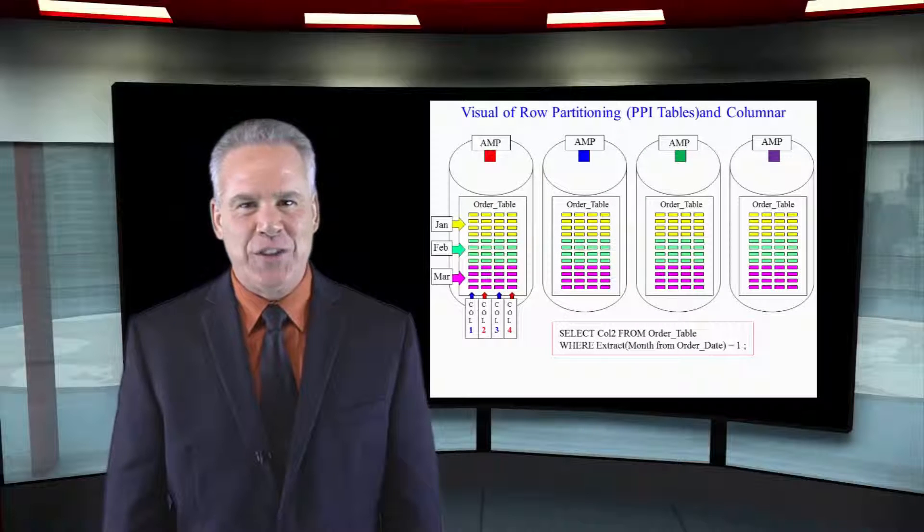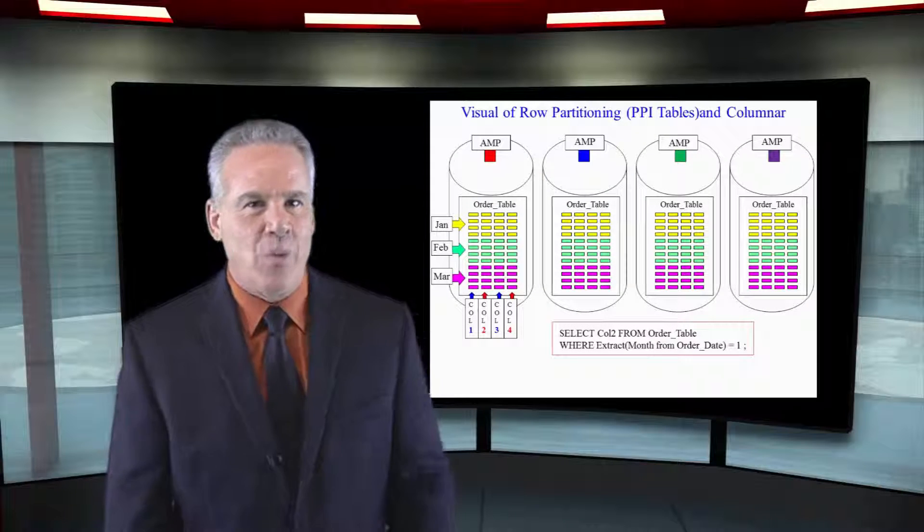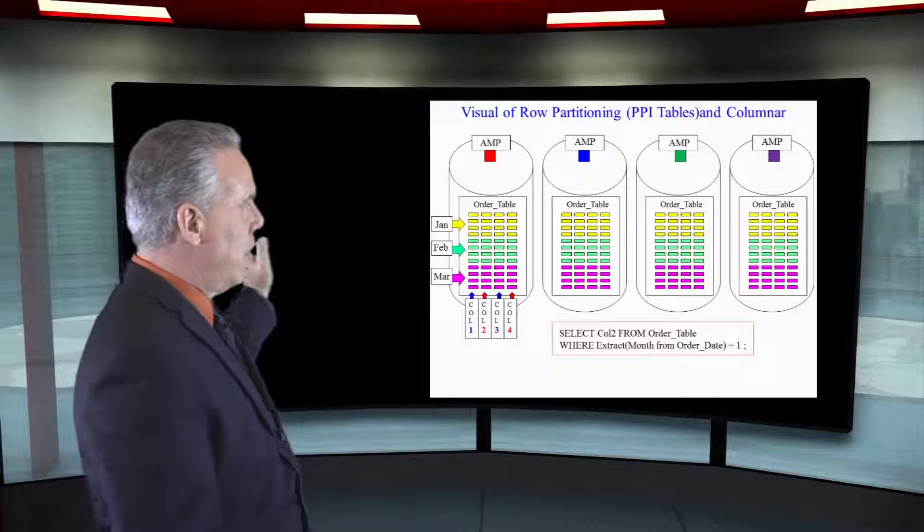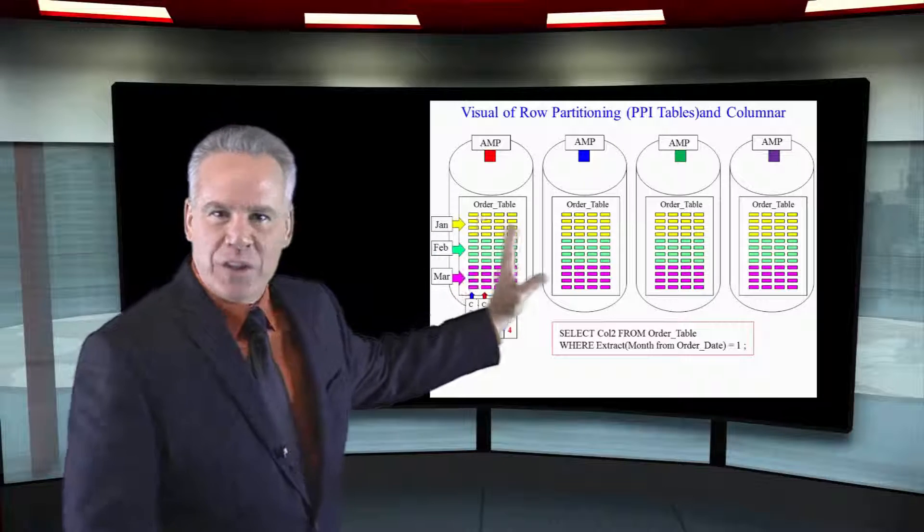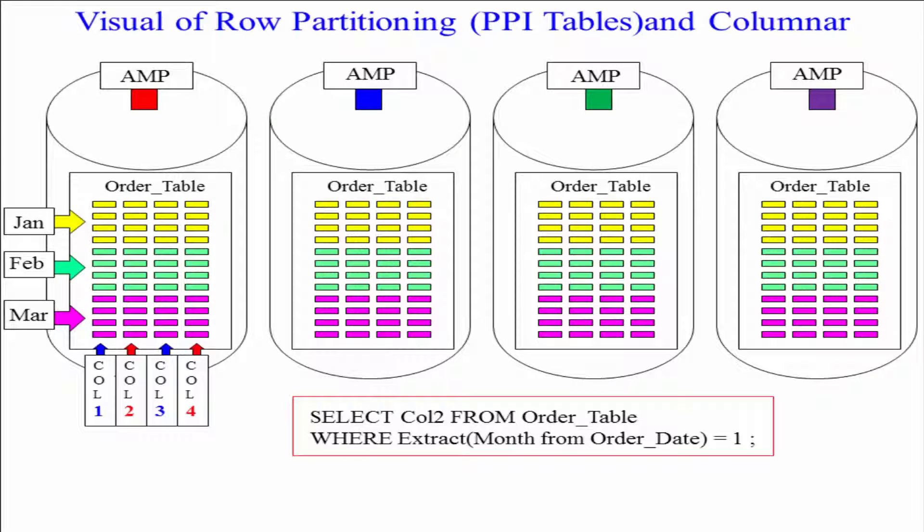Look at this beautiful design. We've actually got our horizontal partitioning by month. January stuff's at the top, February stuff's in the middle, March stuff's at the bottom. And then we take each column and put it in its own container.